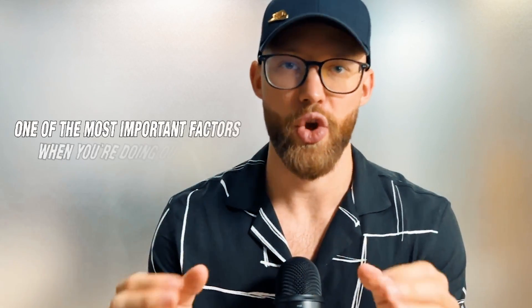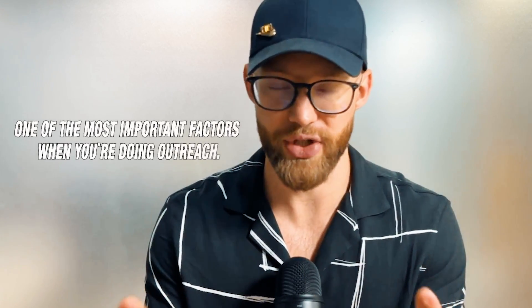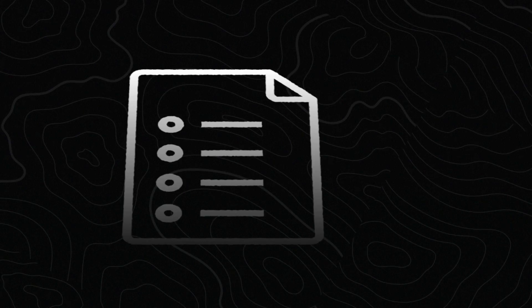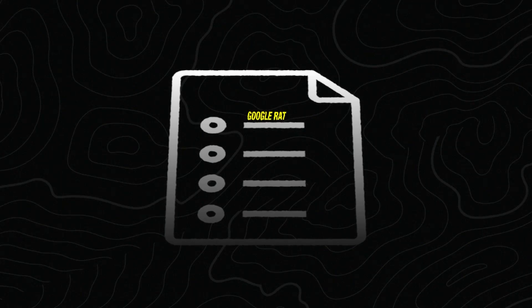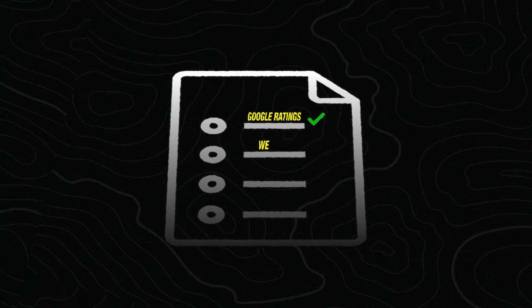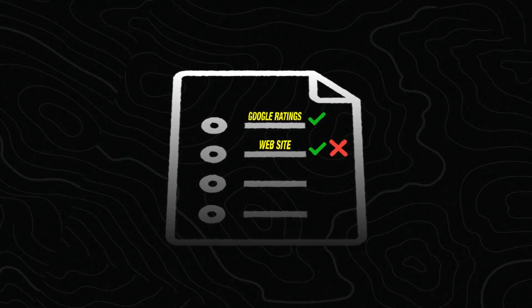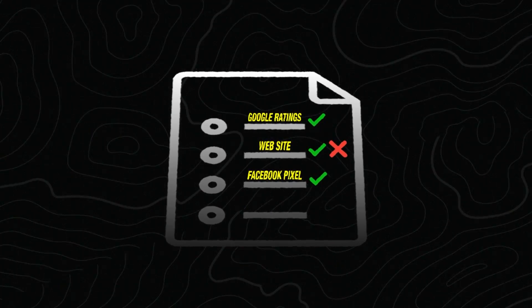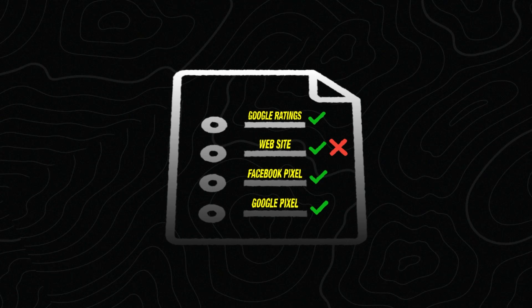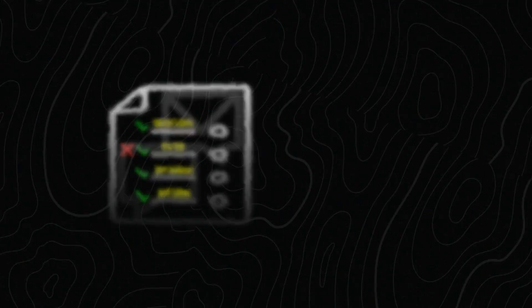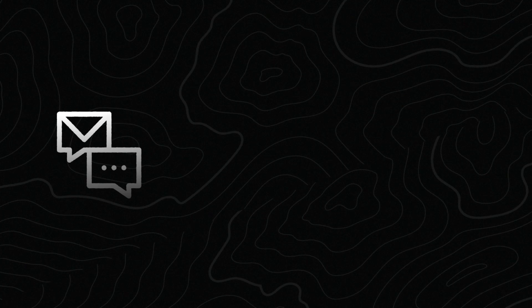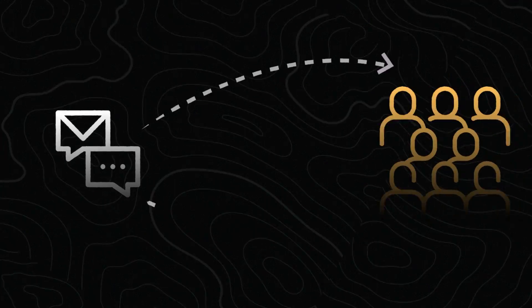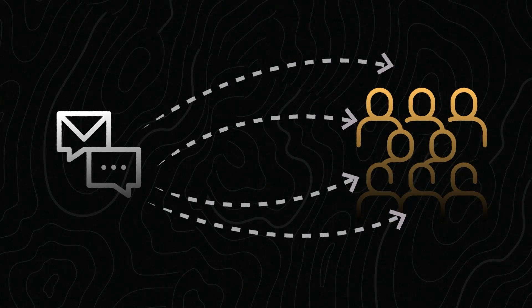In fact, your lead list is one of the most important factors when you're doing outreach. If you get a lead list that shows you Google ratings, or whether someone has a website or doesn't have a website, maybe they have a Facebook pixel installed or a Google pixel installed — you can now craft outreach messages based around what they have or what they don't have. So you're not reaching out to the masses, wasting your email credits or money on leads that won't even convert in the first place.